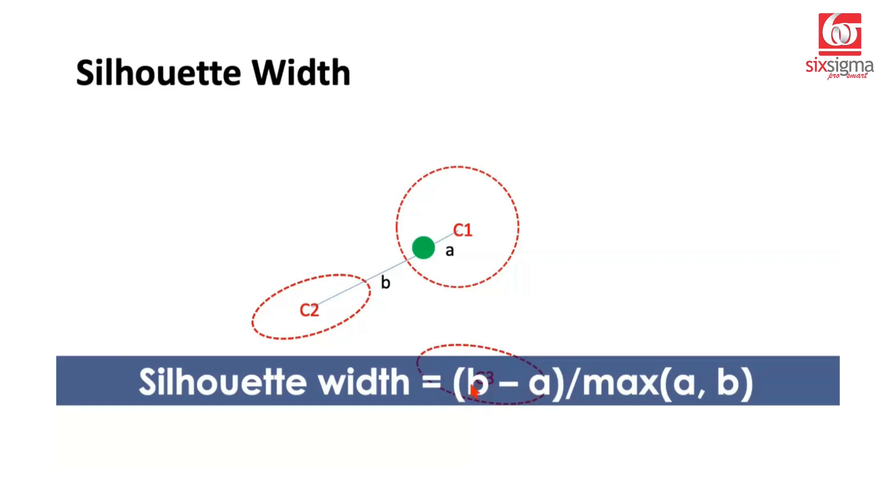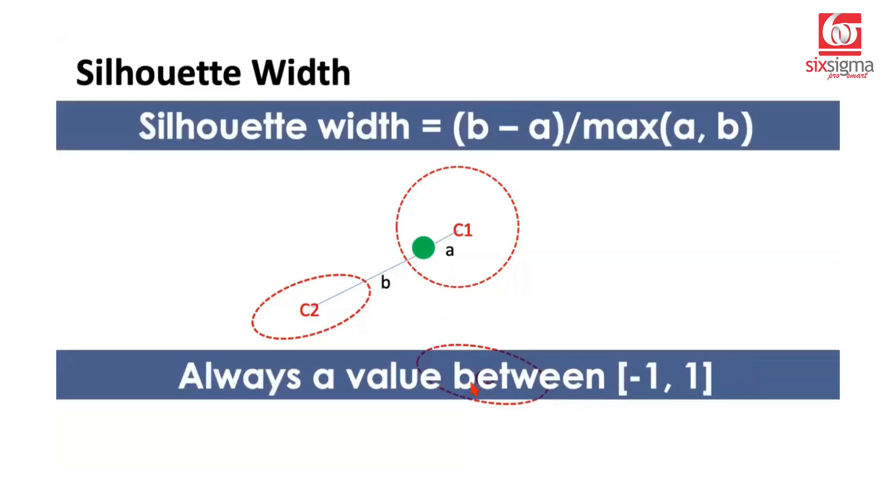But this value will be a negative value if somehow A is greater than B, which simply means that we've assigned the point to a wrong cluster because it is closer to another cluster center compared to its own current assignment. So silhouette score is a value that will typically be between minus one to one, both inclusive. The extreme case where it becomes one will be a scenario when the point is sitting right at its center. In that case, this value of A will become zero. If the point is right in the center, the distance reduces to zero. So you're saying B divided by max of zero and B, which will again be B. So B divided by B, that will be one. When would that be minus one? When this distance of B is zero, which means this point is sitting at the center of the other cluster. This distance B has become zero. So minus A divided by A, that will be minus one.